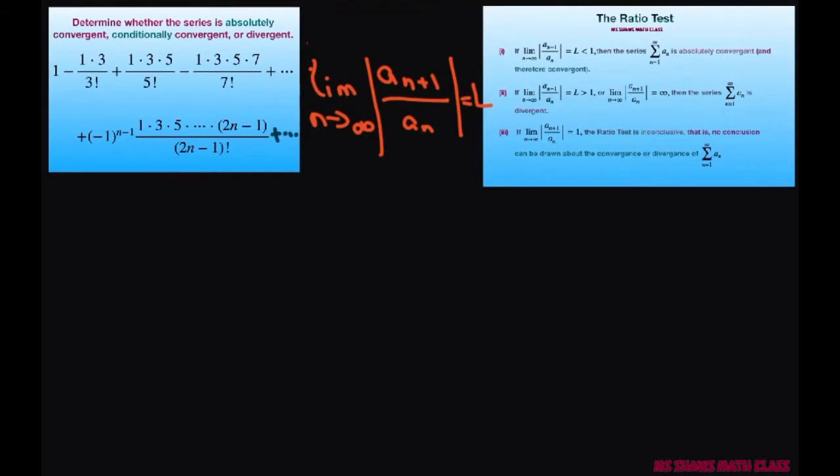We're going to use the ratio test given here to find the limit. To see if it's absolutely convergent, it's going to be less than 1. If it's divergent, it's going to be greater than 1. So I'm going to rewrite this and condense it to the sum.